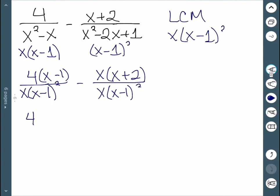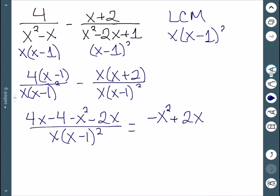Multiplying out gives 4x minus 4. We're subtracting, so we distribute the negative. Simplifying the numerator gives negative x squared plus 2x minus 4, all over x(x minus 1) squared.